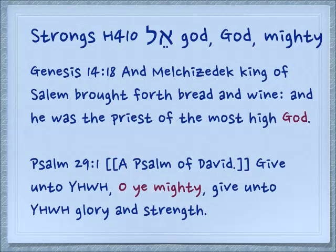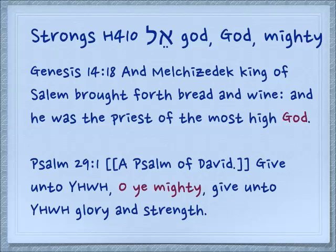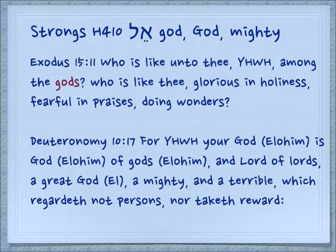So here are some examples where the word El is used. In Genesis 14:18, Melchizedek, King of Salem, brought forth bread and wine, and he was the priest of the Most High God. El can be any sort of God. Psalm 29:1, a Psalm of David — 'Give unto Yehovah, O ye mighty, give unto Yehovah glory and strength.' The phrase in Hebrew is actually Bnei Elim, sons of the mighty, but it's not referring to Yehovah — the verse says the mighty are supposed to give unto Yehovah. It can be used for any pagan gods.